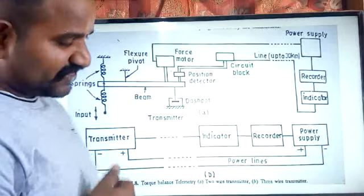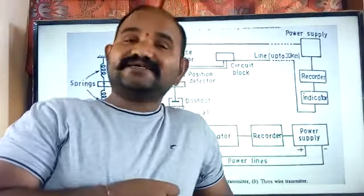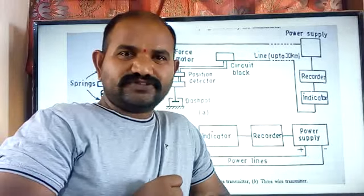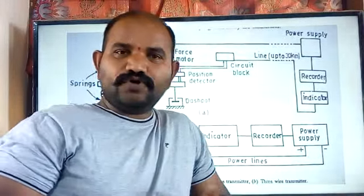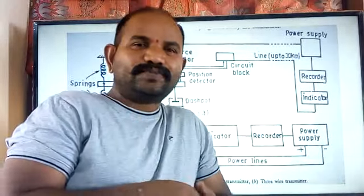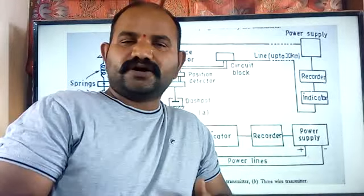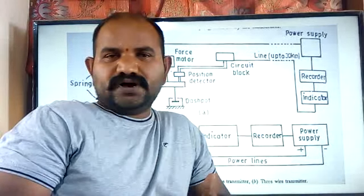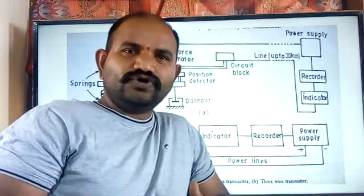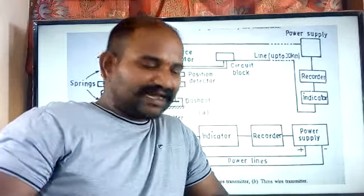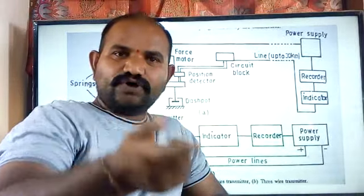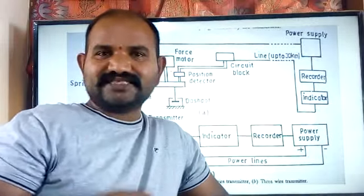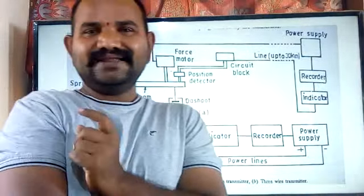The next topic is the landline telemetering system with a feedback system. In a closed loop control system, the output is controlled automatically — a part of the output is taken and compared with the reference signal, and that path is called feedback. Here we are going for landline telemetry with feedback, using two-way as well as three-way communication. We must be aware of wire characteristics: resistance and whether they are affected by external noise.